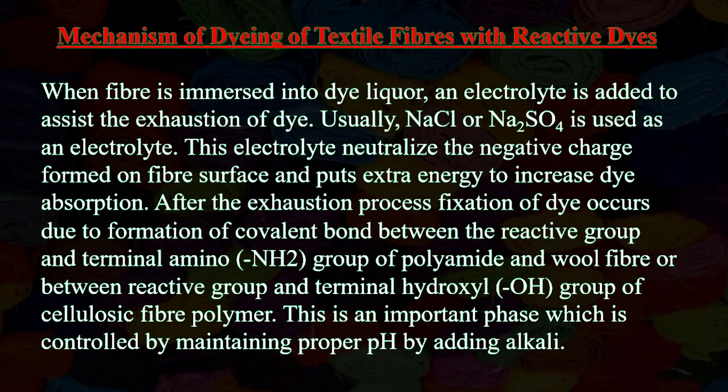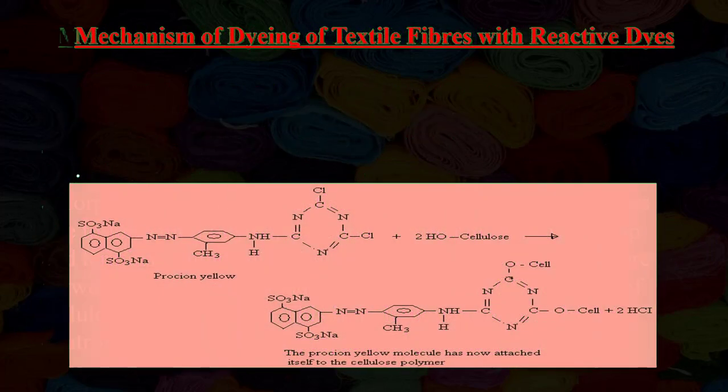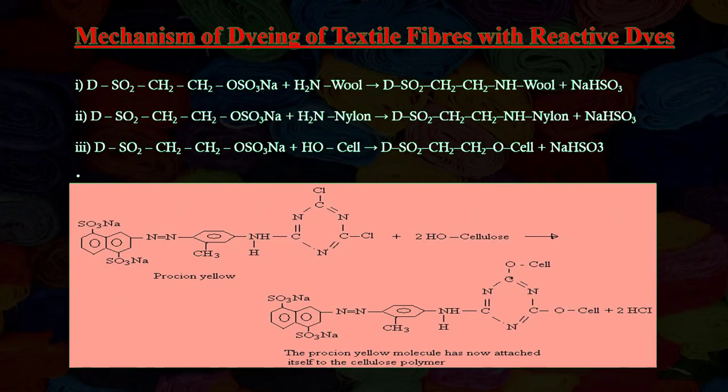Mechanism of dyeing of textile fibers with reactive dyes: When fiber is immersed into dye liquor, an electrolyte is added to assist the exhaustion of dye. Usually, sodium chloride or sodium sulfate is used as the electrolyte, which neutralizes the negative charge on the fiber surface and provides extra energy to increase absorption. After exhaustion, fixation occurs due to formation of a covalent bond between the reactive group and the terminal amino group of polyamide and wool fiber, or the terminal hydroxyl group of cellulosic fiber polymer. This phase is controlled by maintaining proper pH by adding alkali.